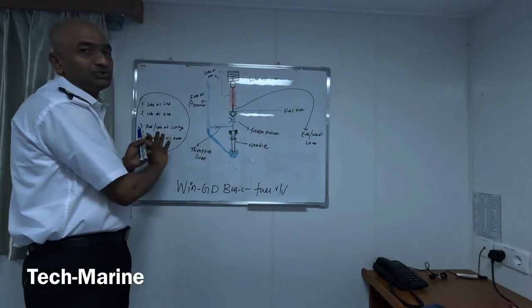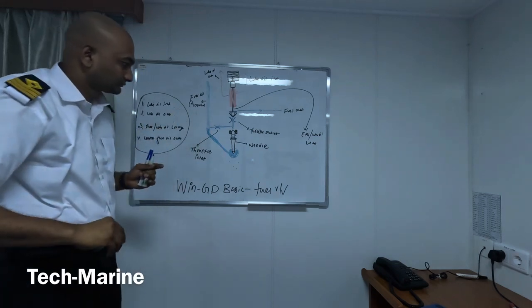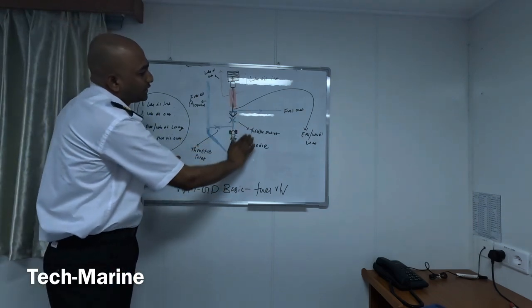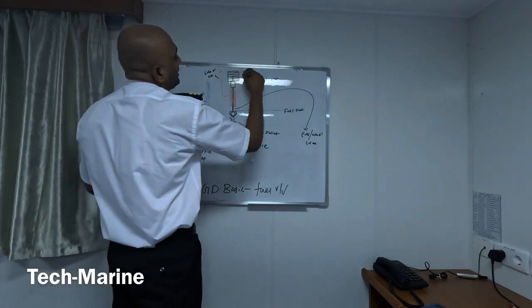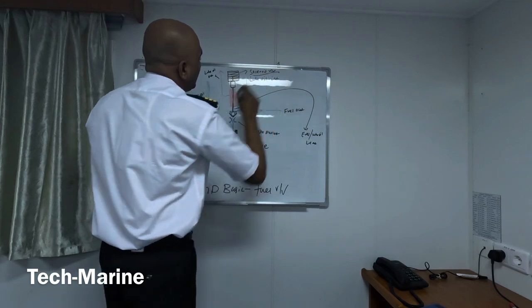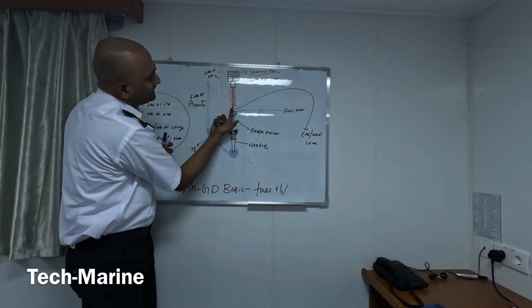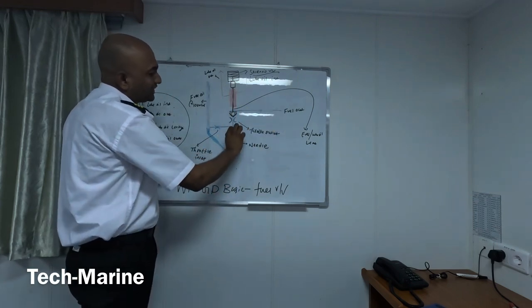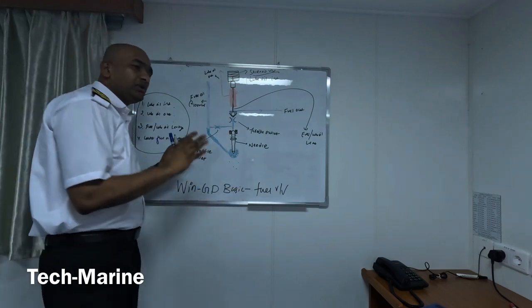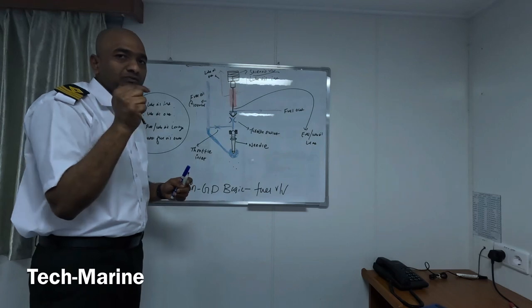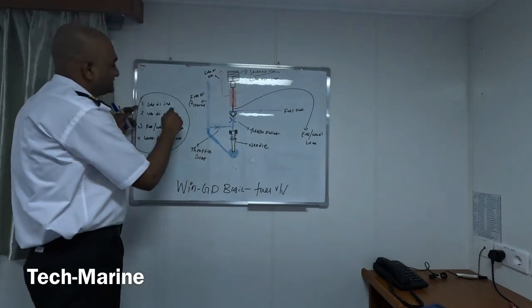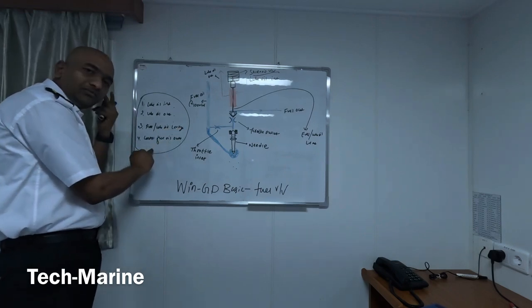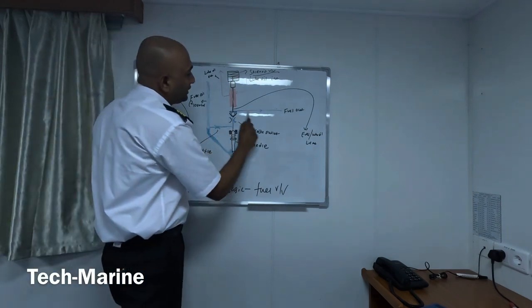We have four lines connected to the fuel injector. To summarize the control part: this is the solenoid valve. When this solenoid valve activates, the control rod goes up, the fuel drains from the top of the needle, and the fuel is injected. When you go on board and see the fuel injector, you will find four small lines: lube oil inlet, lube oil outlet, fuel-by-lube oil leakage, and the control fuel outlet.